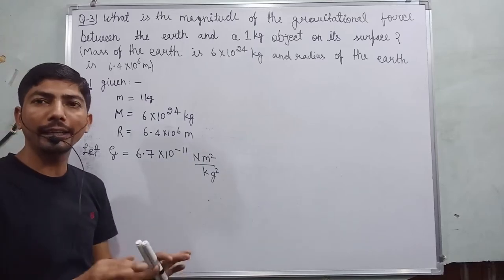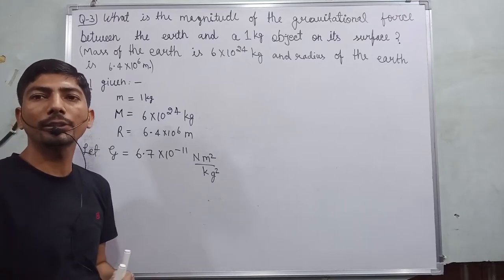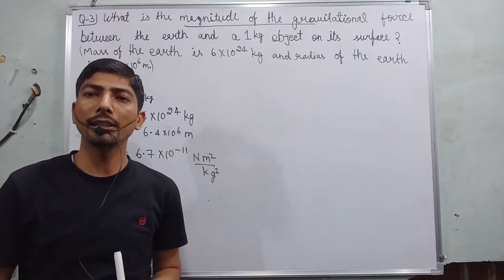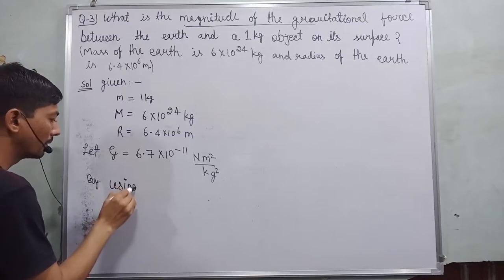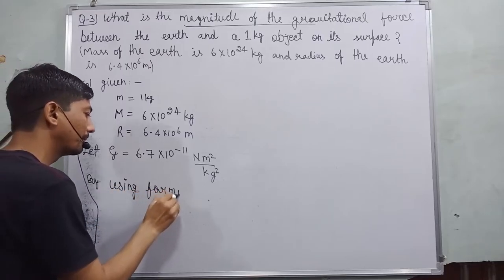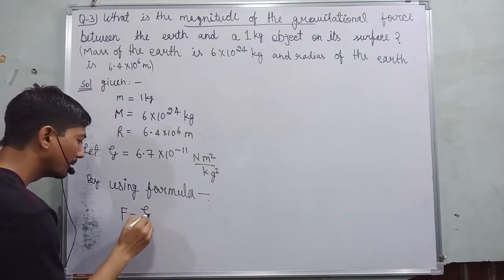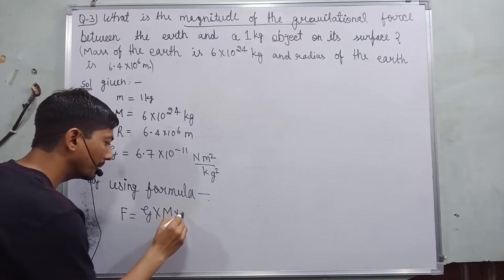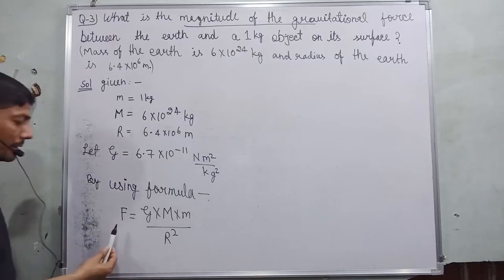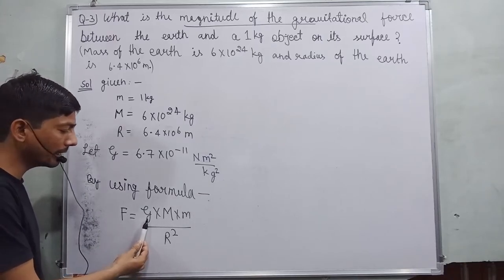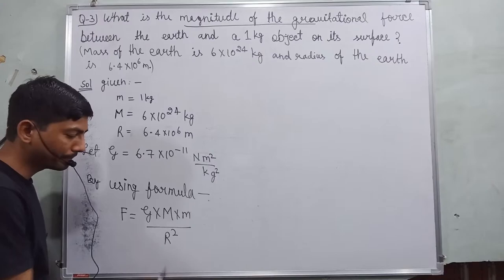The first thing which is notable, you always write the unit of the quantities like kg, meter, newton, meter square per kg square. Before going to start any numerical to solve it, the first thing identified is what needs to be found out in these questions. The need is magnitude of gravitational force. So by using formula, the formula is F = GMm/R². I first discuss you, this is magnitude of force, this is universal gravitation constant, this is mass of earth, mass of object, radius of earth.